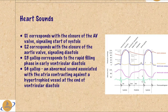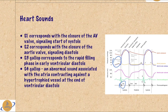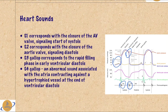Briefly about heart sounds: the first heart sound, S1, corresponds with the closure of the AV valve — the mitral valve — which signals the start of systole. S2 corresponds with the closure of the aortic valve at the end of ventricular systole, and that signifies diastole starting.